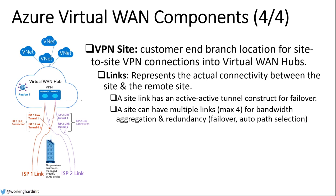Another component is the VPN site. Important about the VPN site is the concept of a link — one connection to an on-site location. A link is always active-active, so it has two tunnels, which is important for failover. You can have multiple links, up to four, giving you failover, auto path selection, redundancy, and bandwidth aggregation.